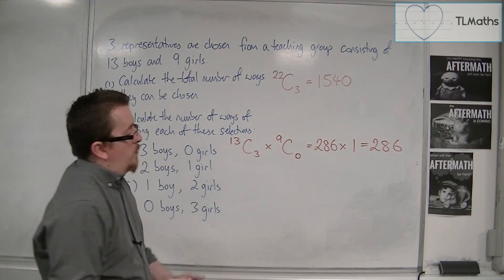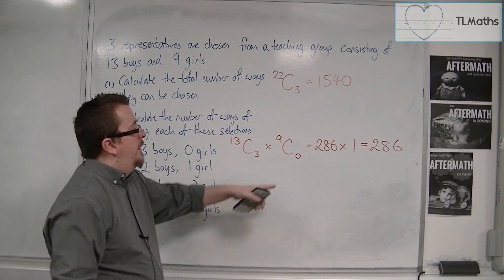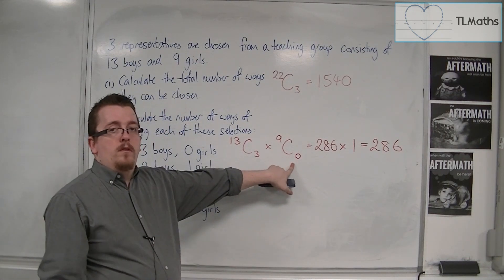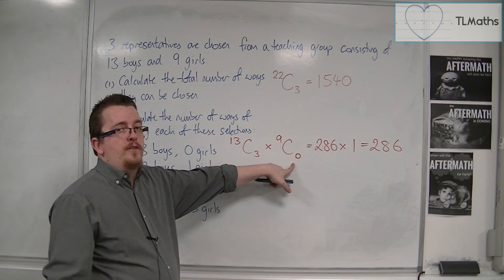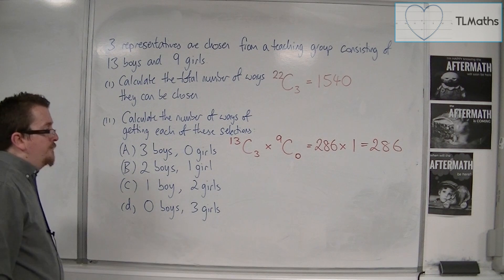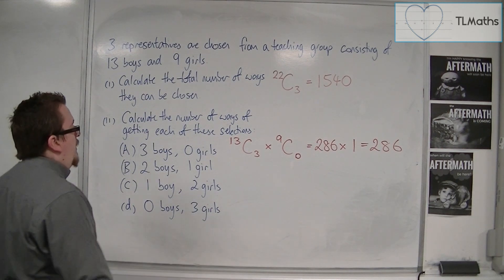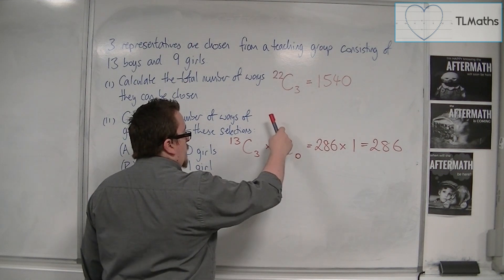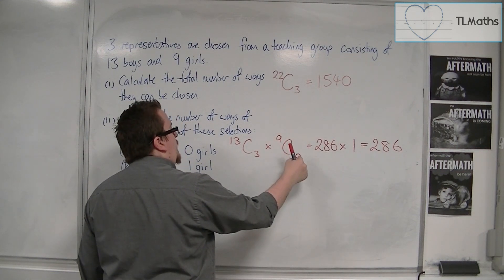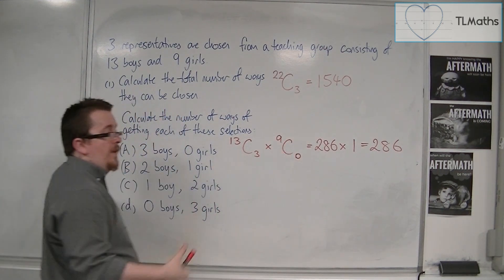In other words, how many different ways can you pick zero girls from nine possible students? It's going to be one. Any number here and you get C0, you will find that it is 1.